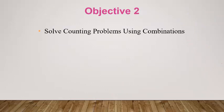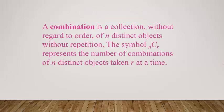The only difference with combinations is basically when the order doesn't matter. A combination is a collection without regard to order of r objects chosen from n distinct objects, without repetition. The symbol nCr — read as n combinations of r or n choose r — represents the number of combinations of n distinct objects taken r at a time.